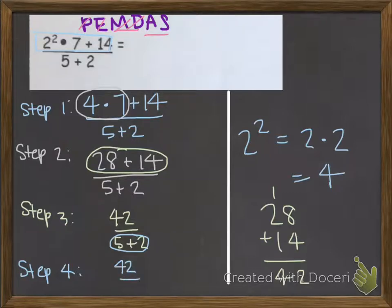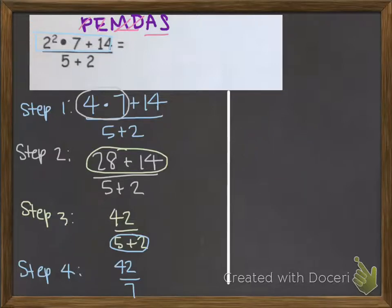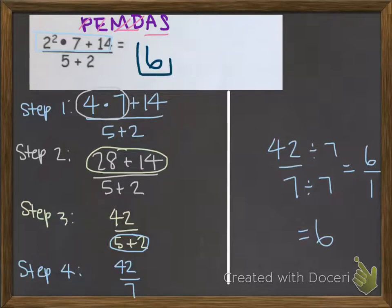So I'm going to write 42 over 7. And I'm noticing that my answer is an improper fraction here, 42 over 7, which means I can simplify. I can simplify this improper fraction by dividing both the top and the bottom by 7. That will give me 6 over 1, which is the same thing as 6. And so my answer to this problem is 6.